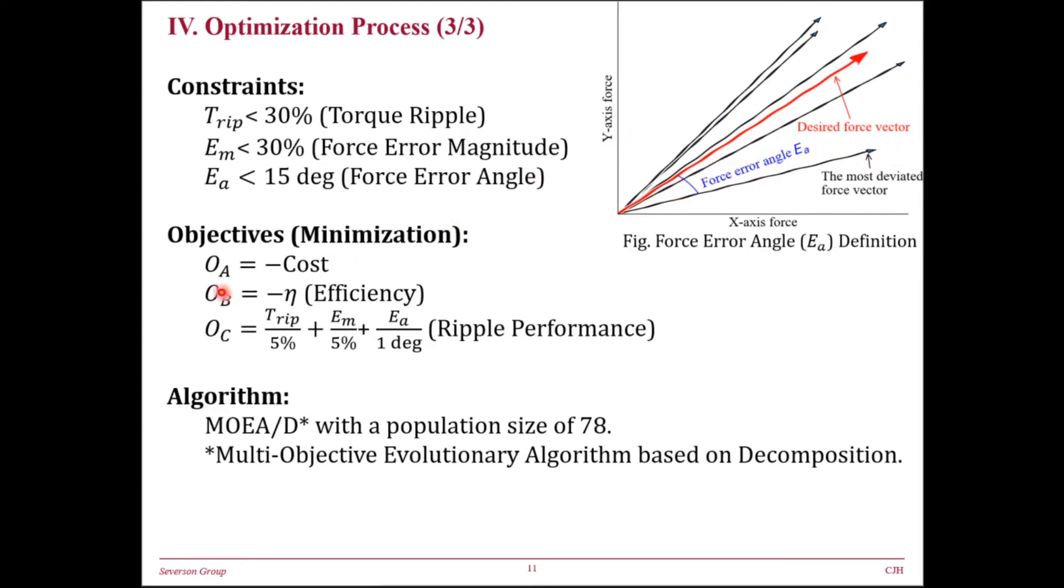Three objectives are defined in optimization. They are active material cost, efficiency, and a weighted sum of these three components. This approach is effective to keep the search process in low dimension space. The MOEAD algorithm is adopted in this paper.